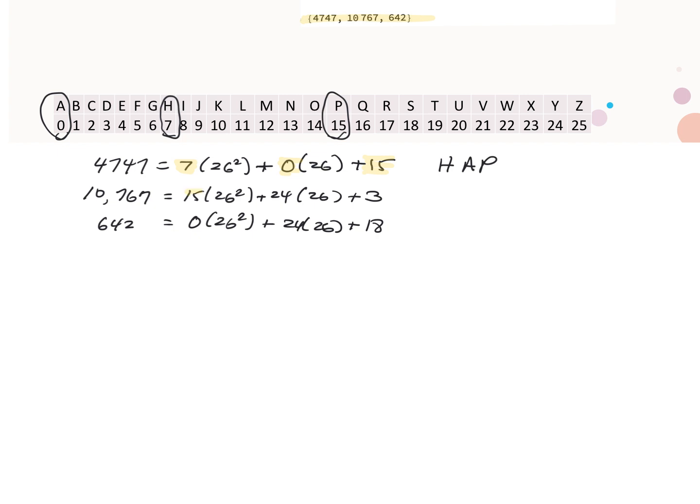The next three letters will be 15, 24, and 3. We look those values up in the table, 15 is P, 24 is Y, 3 is D.